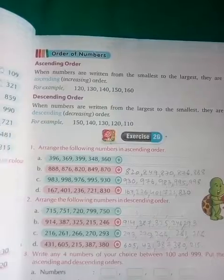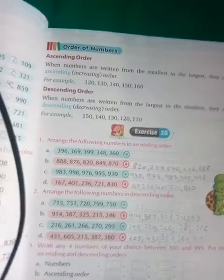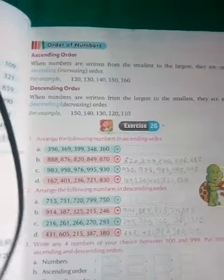I am here on page number 21. You can see it, Exercise 2g. What is written here? Arrange the following numbers in ascending order, which means you have to find out from these numbers which one is less.